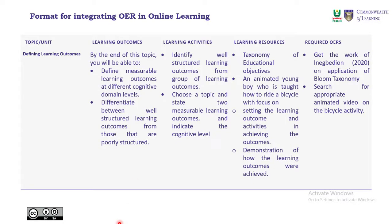Looking at the format for integrating OER in online learning, here we have the topic or units — you can classify it whichever way you want, depending on your context: module, units, or topic. Then you have learning outcomes, followed by the learning activities, learning resources, and required OER. The first thing is to look at the topic you want to address. The topic we are looking at here is defining learning outcomes.